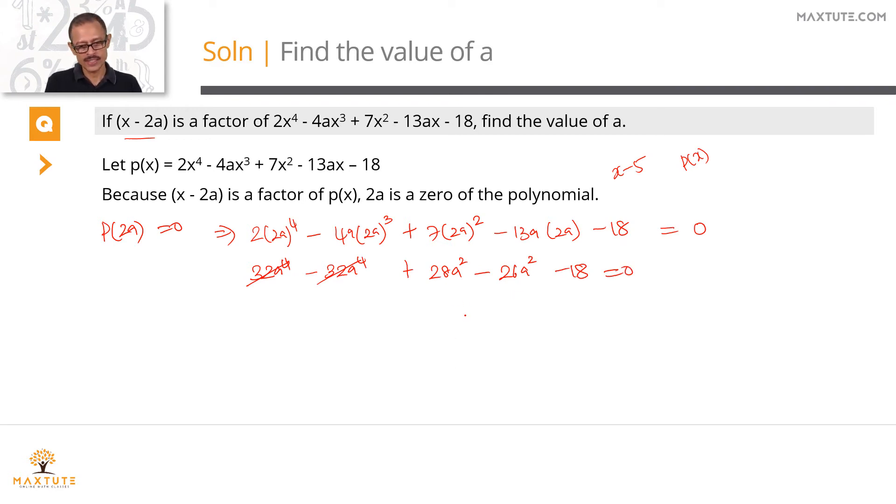28a^2 minus 26a^2 equals 2a^2 minus 18 equals 0. Divide the entire equation by 2 and take this value to the right-hand side. This leaves us with a^2 equals 9. If a^2 equals 9, the value of a is equal to plus or minus 3. So what's the value of a? For this, if x minus 2a is a factor of this polynomial, a could either be 3 or a could be minus 3.